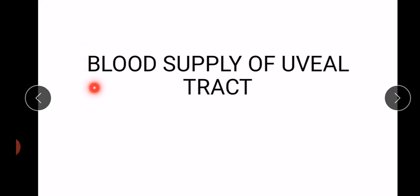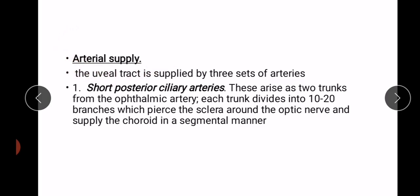Welcome to my channel. In this video we will discuss the blood supply of the uveal tract. First we will discuss arterial supply. The uveal tract is supplied by three sets of arteries. The first set is short posterior ciliary arteries. These arteries arise as two trunks from the ophthalmic artery, a branch of the internal carotid artery. Each trunk divides into 10 to 20 branches which pierce the sclera around the optic nerve and supply the choroid in a segmental manner.